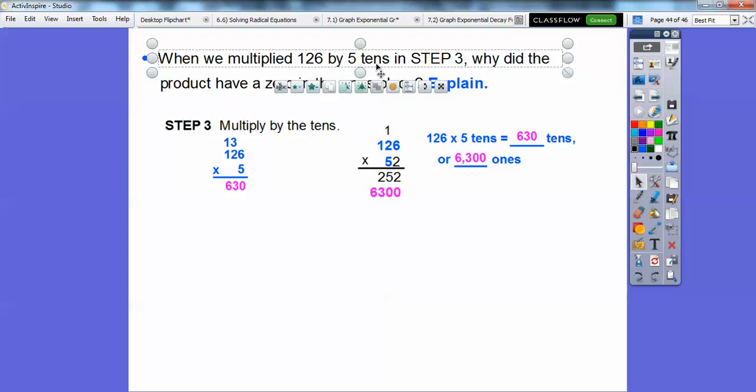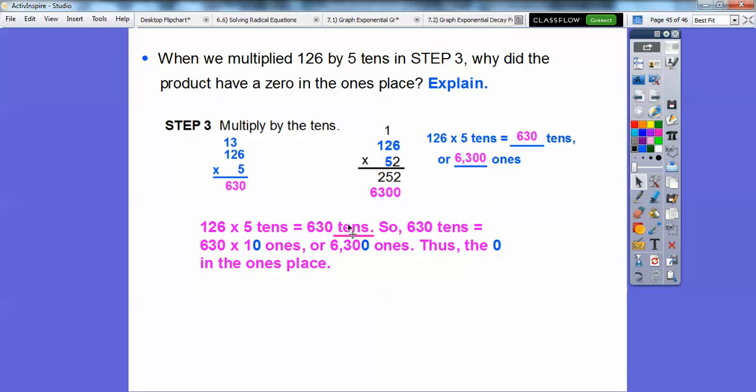Because it gave us 630 right there. So if it gave us the 630, how come it became 6,300? Well, that's because the 126 times 5 tens gives us 630 tens, you guys. So 630 tens is 630 times 10 ones. So this additional 0 right here added this additional 0. So that's where the 0 became in the ones place. That gave us this 0 right there in the ones place.